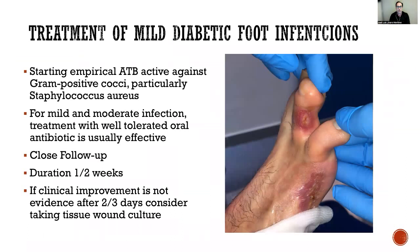Starting with the treatment of mild diabetic foot infection, especially in superficial wounds with a short duration and without any other complication, you can start by selecting an antibiotic active against gram-positive cocci and particularly against Staphylococcus aureus. For mild and moderate infection, oral antibiotics are usually effective, but a close follow-up is necessary in order to assess the patient and identify any complications or worsening of the infection.